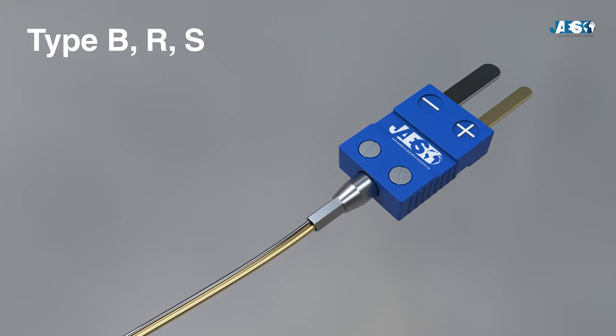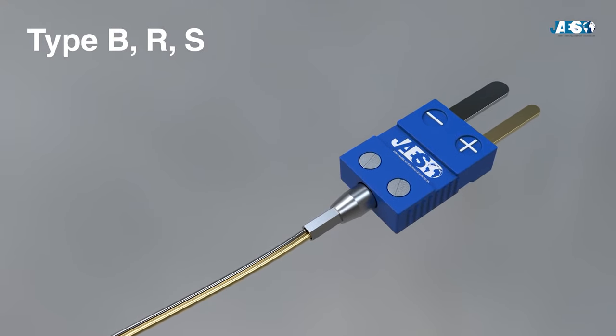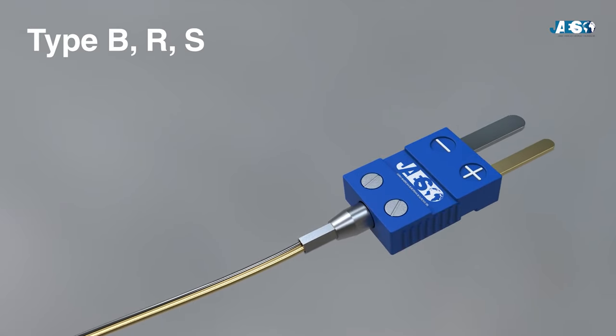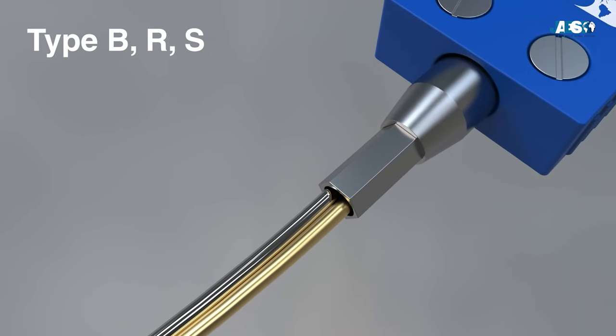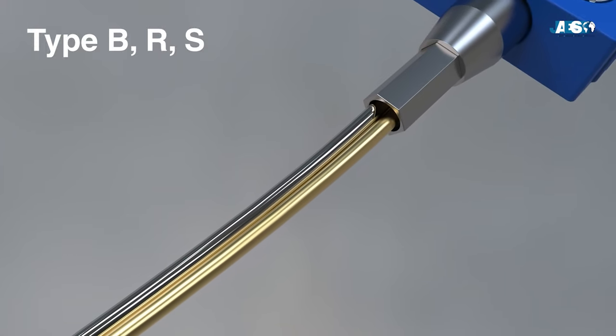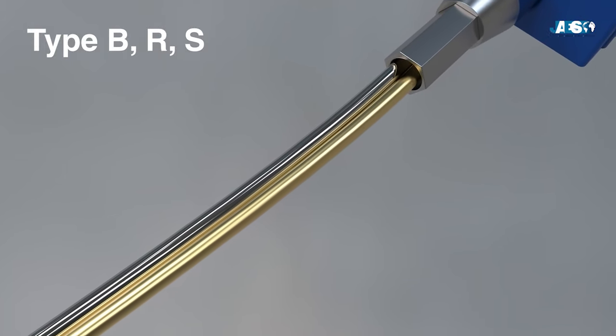Types B, R, and S are those composed of noble metals, or platinum in different percentages. They are the most stable thermocouples, but their low sensitivity limits their use to measurements of high temperatures above 300 degrees Celsius.